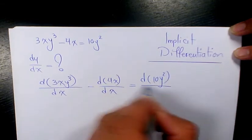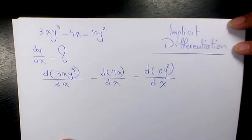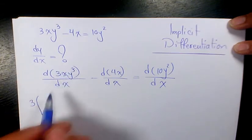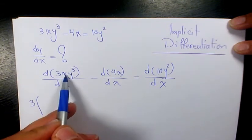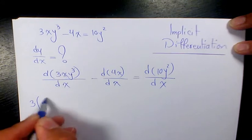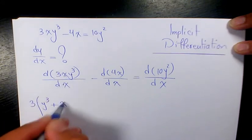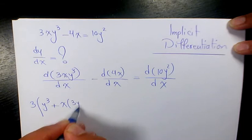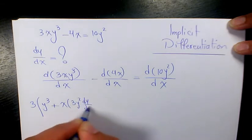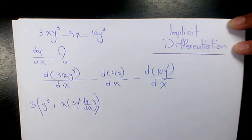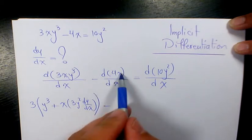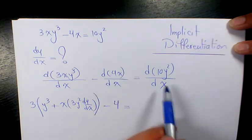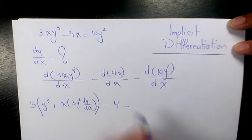Then it's going to be 3 times the product rule: derivative of x is 1, times y³, plus x times the derivative of y³, which is 3y² dy/dx. Minus the derivative of 4x with respect to x, which is 4.